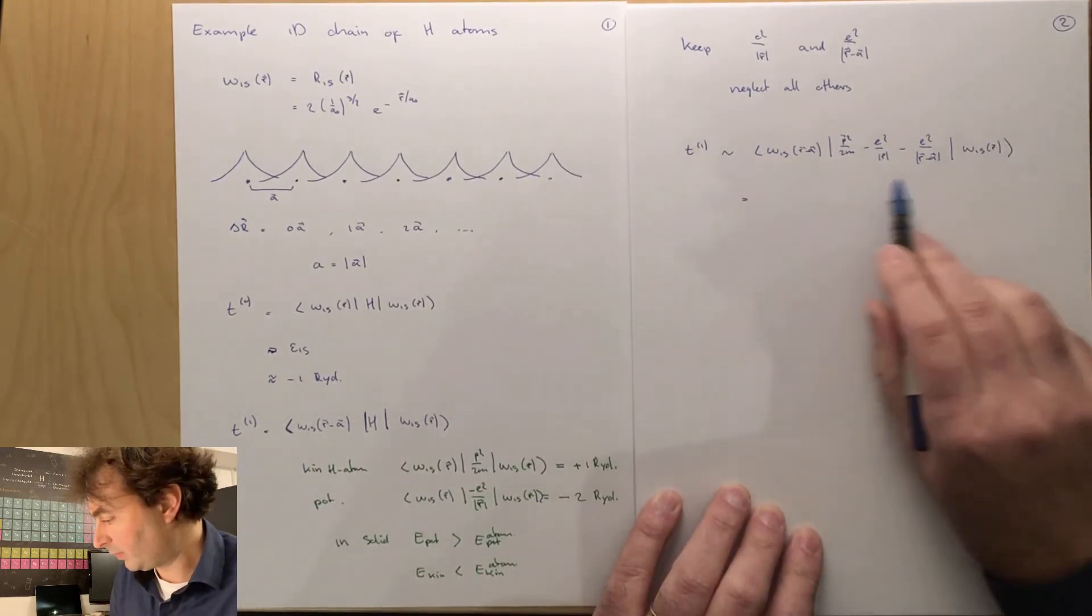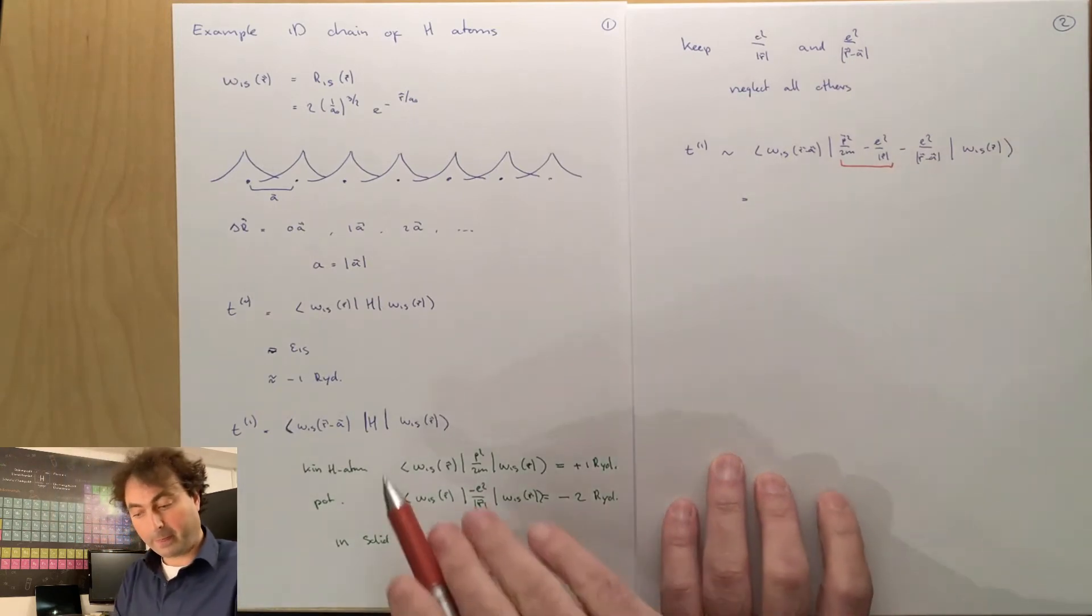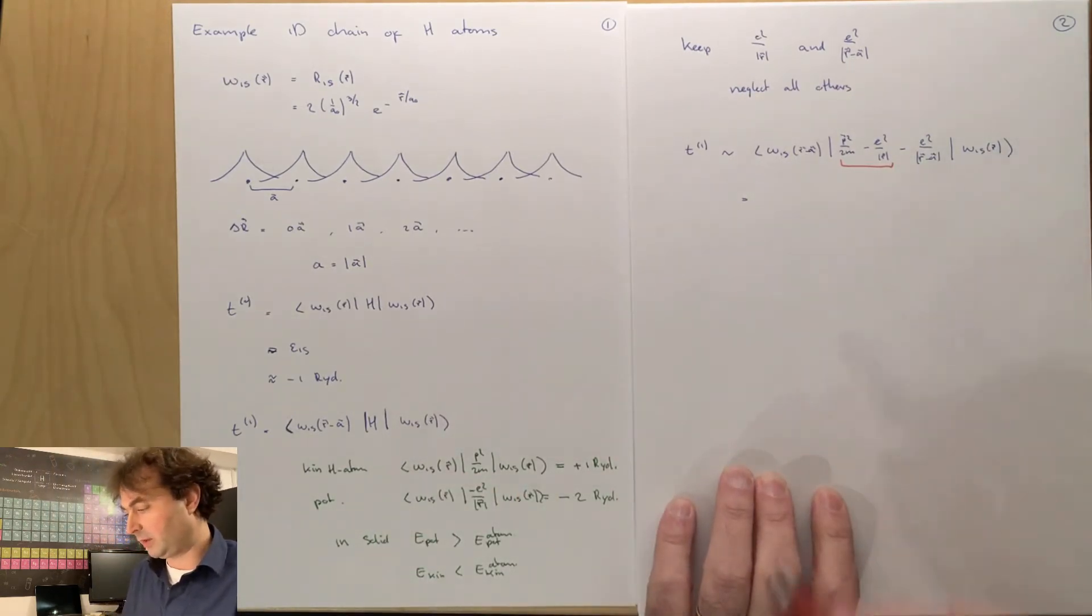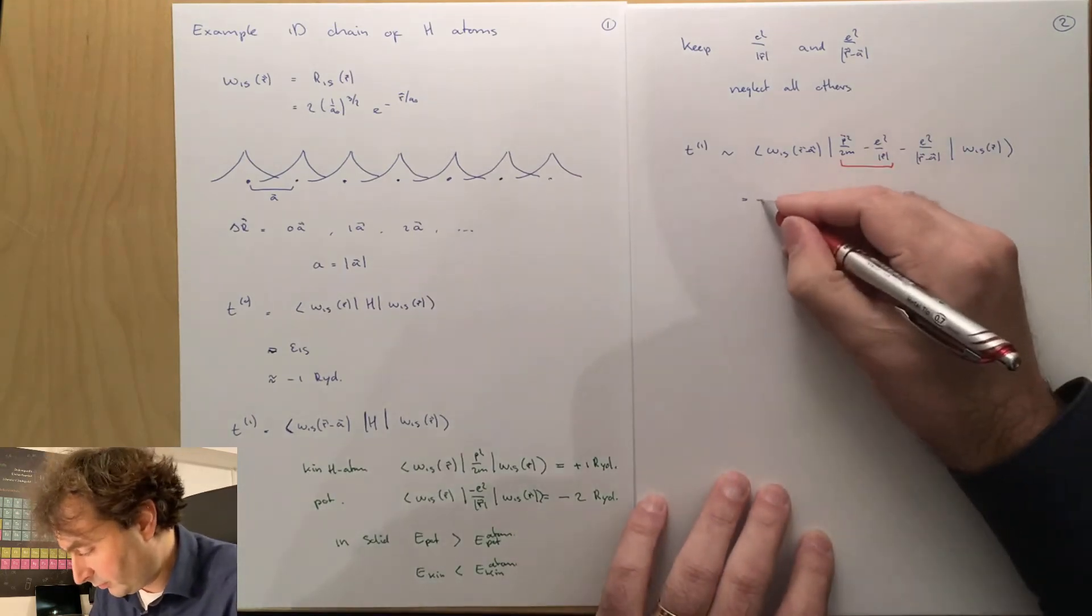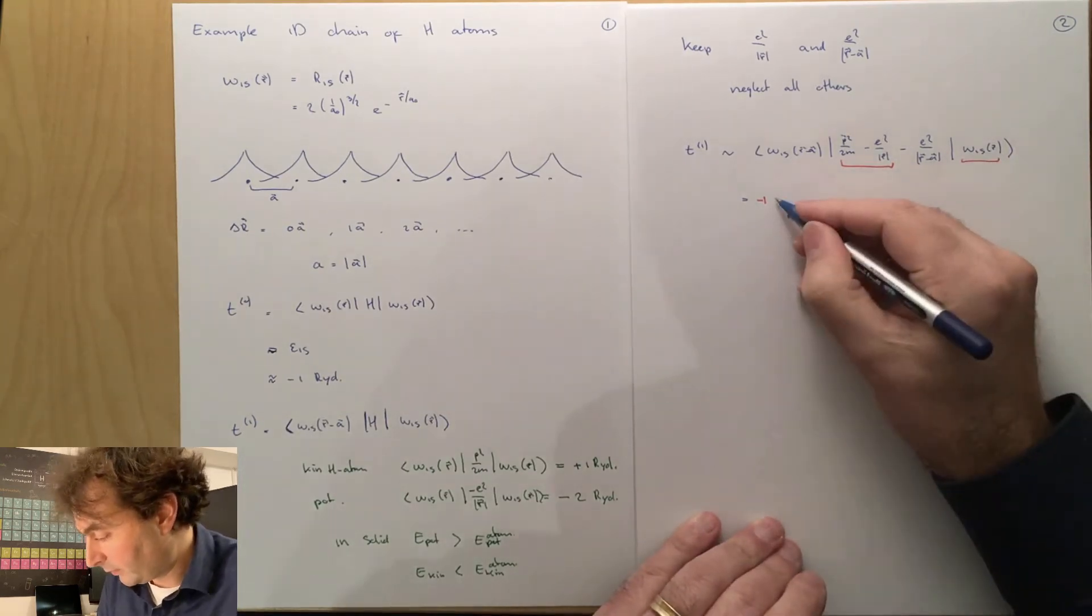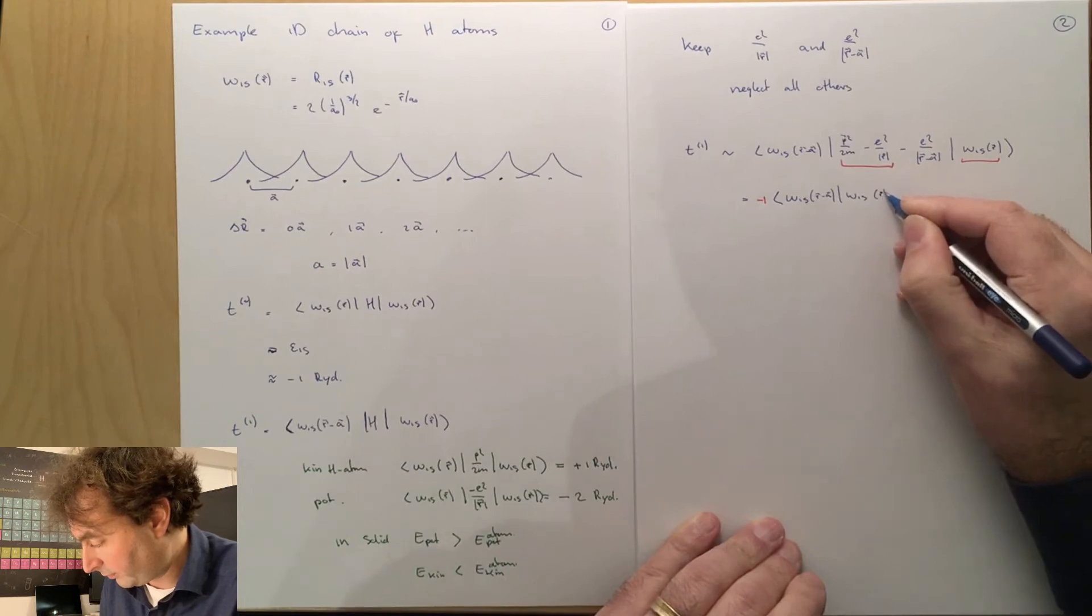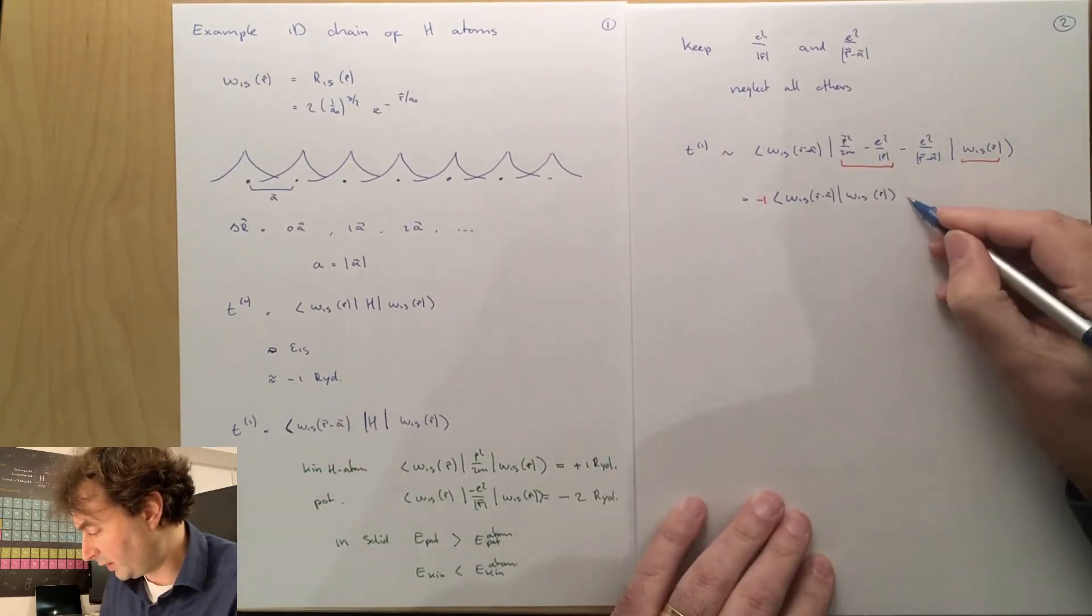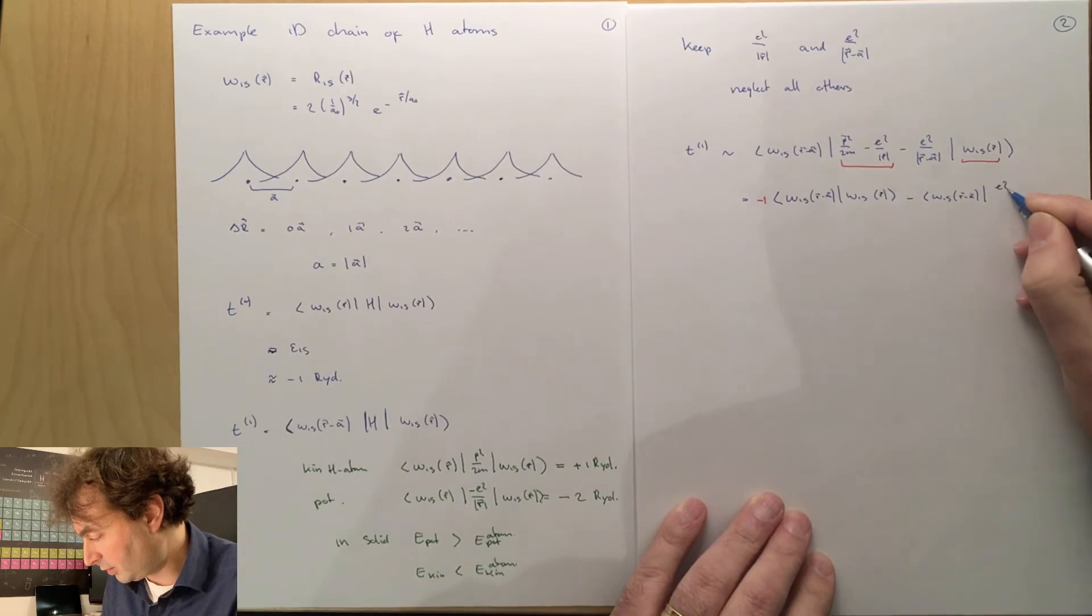This is, well, if we look at this part, that is just the atomic Hamiltonian around site 1s. So that is going to give me an energy of minus 1 Rydberg. So this is minus 1 acting on that, omega 1s R minus A, omega 1s of R. And then we have minus omega 1s R minus A, E square over R minus A, the norm, omega 1s centered around the origin.